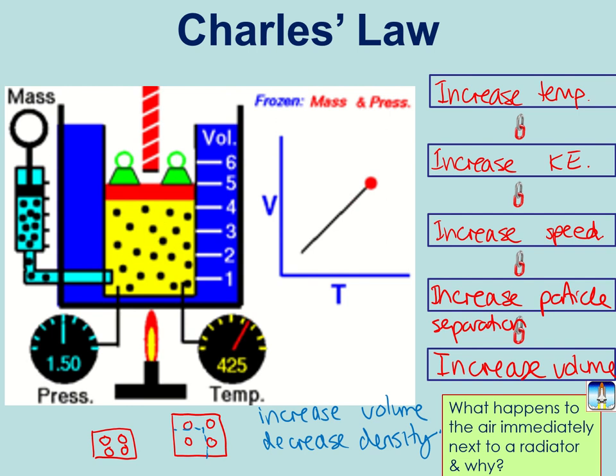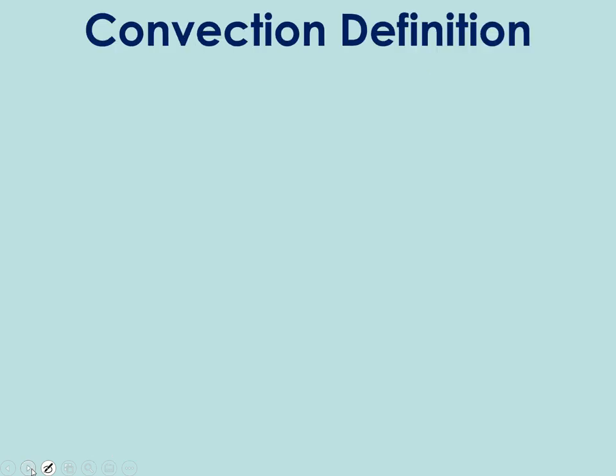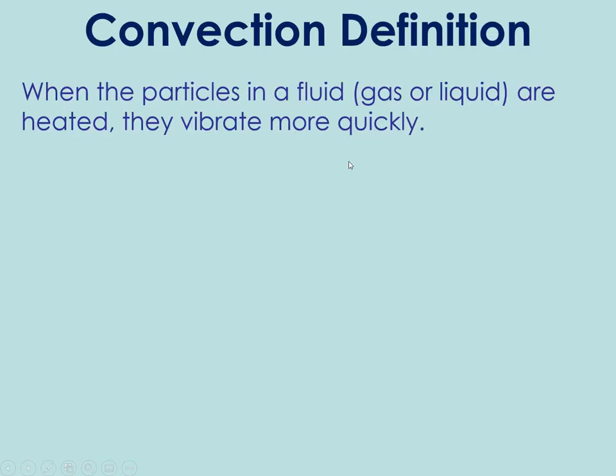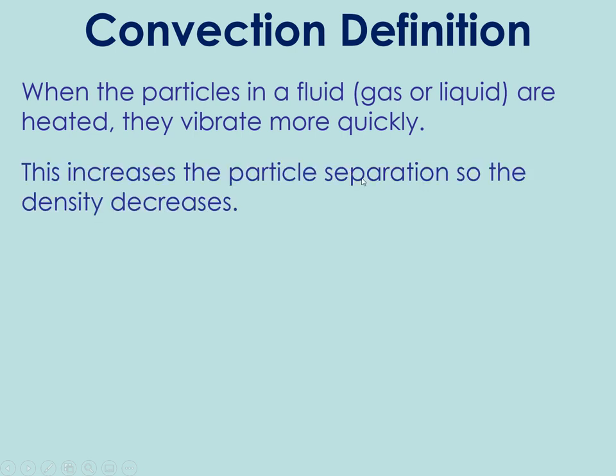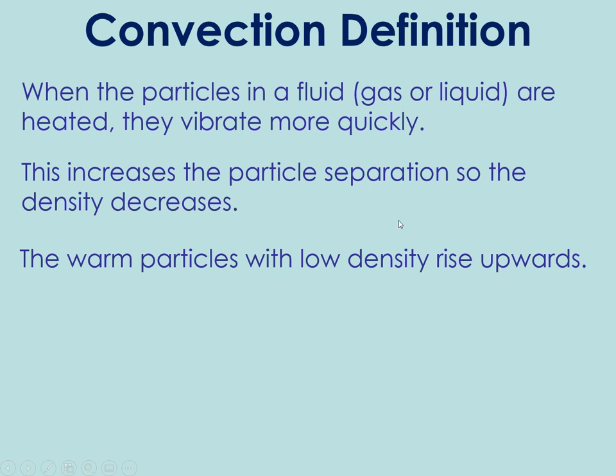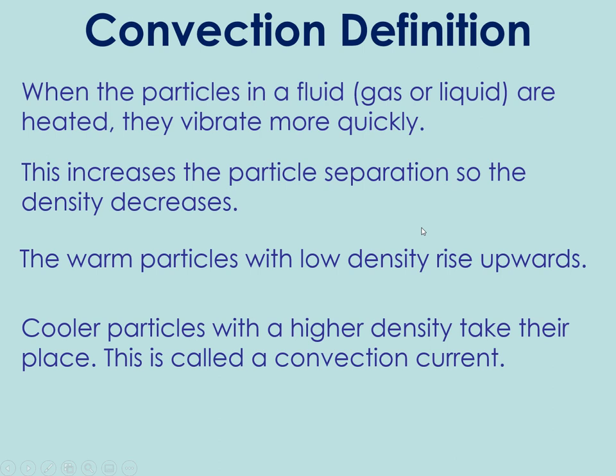So the definition of convection is this. When particles in a fluid, so in a gas or liquid, are heated, they vibrate more quickly. This increases the particle separation, so the density decreases. Particles with a low density rise upwards, and cooler particles with a higher density take their place, and that's what we call a convection current.